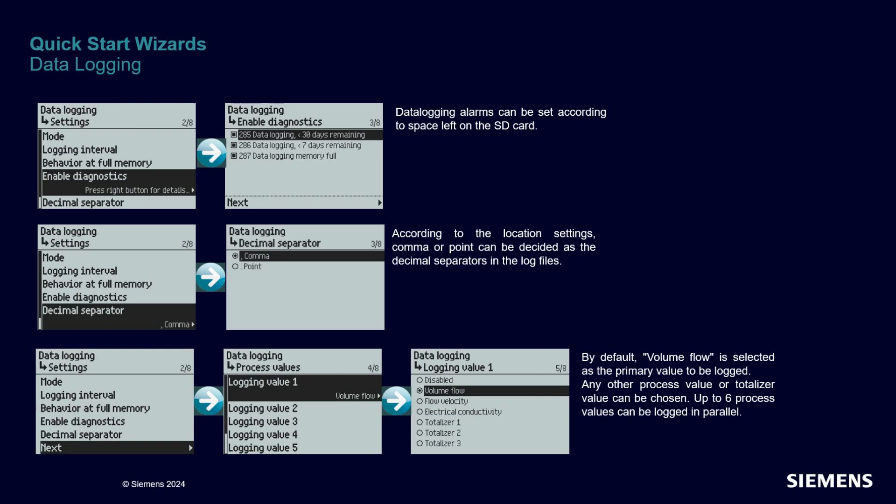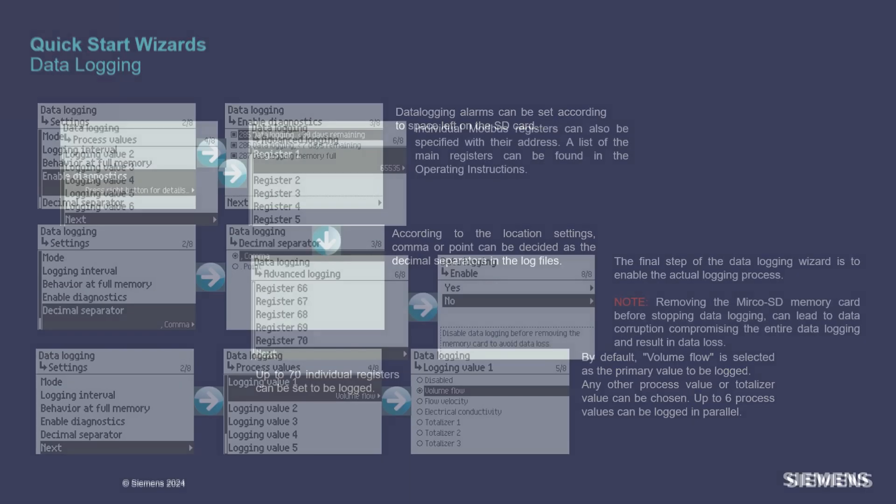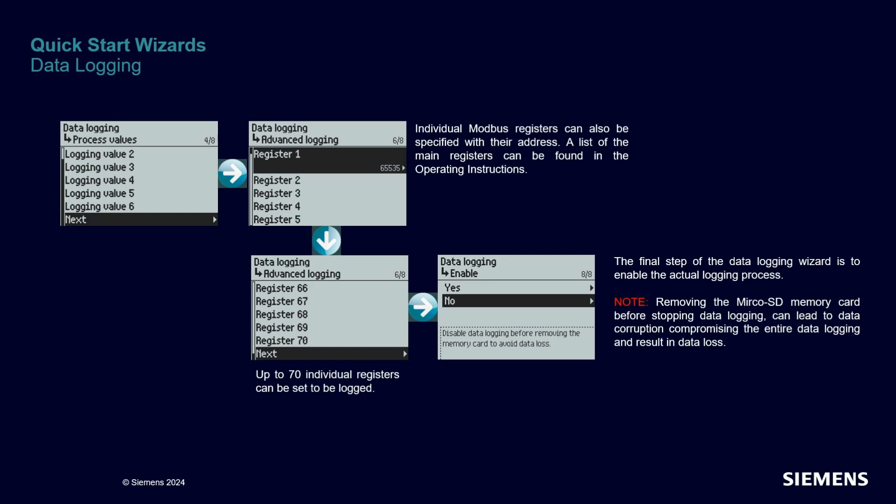Let's review the main settings of the data logger engine. You can select when you wish to be informed that the SD card is getting full, in order to receive a signal that you need to retrieve the data. In creating the log file, you can separate the desired values by either a comma or a point. Each log value can be selected individually. You can also choose to log individual Modbus registers by specifying their addresses — you can log up to 70 parameters this way.